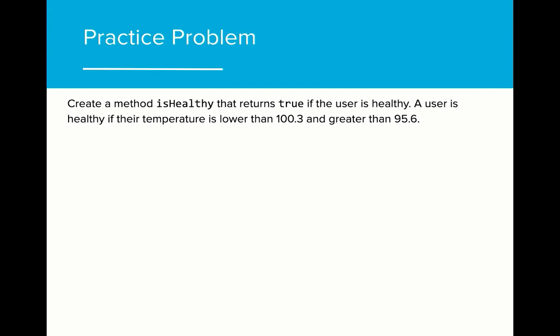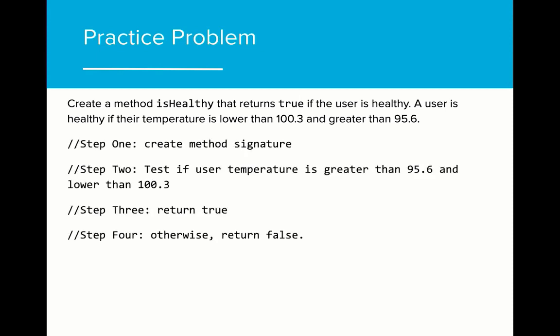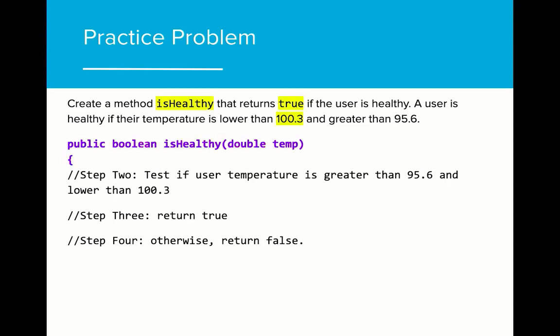Let's try to do one of these on our own. Create a method isHealthy that returns true if the user is healthy. A user is healthy if their temperature is lower than 100.3 and greater than 95.6. Feel free to use nested if statements or logical operators. If you need some time to think about how to solve this, you can pause the video. Here are the steps that we could take to complete this problem. First, we need to create the method signature. We know that the name should be isHealthy and the return type should be boolean because we are returning a boolean value.